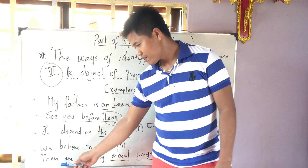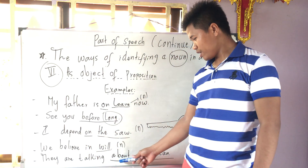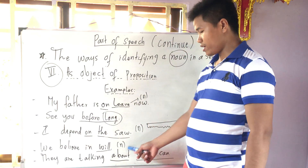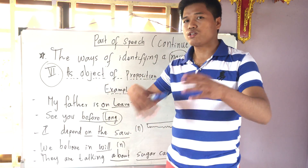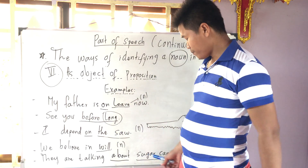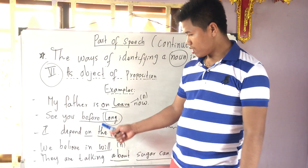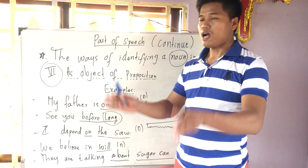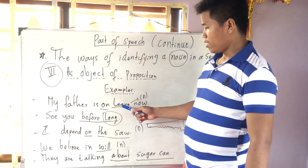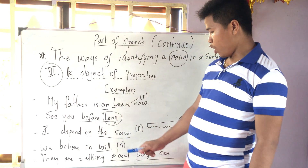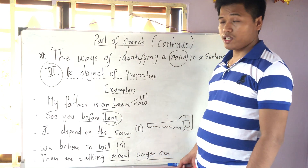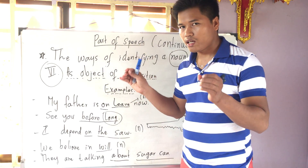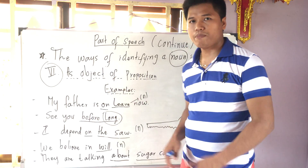Number five: 'There are talking about the school' — meaning they are discussing about the school. So 'about', 'in', 'on', 'before', and 'on' are prepositions, while 'leave', 'long', 'stores', and 'school' are the nouns and they are the objects of the prepositions.